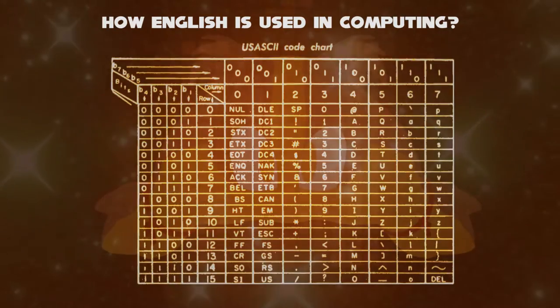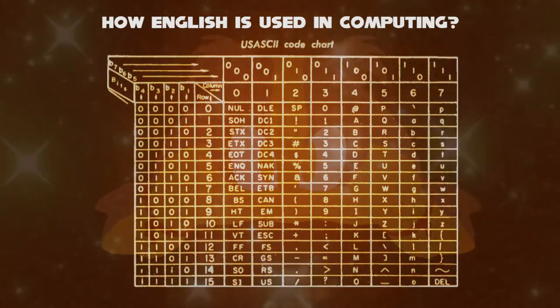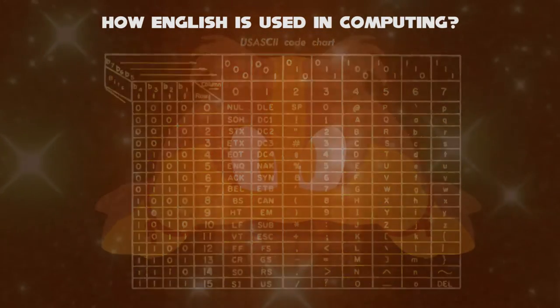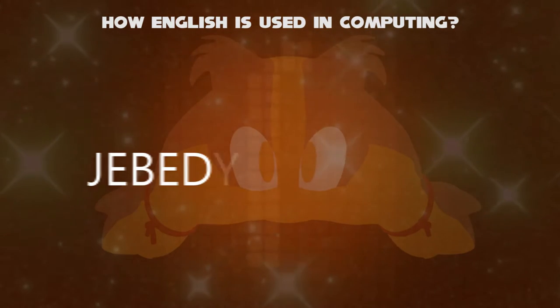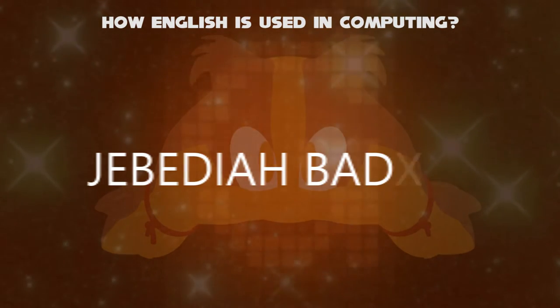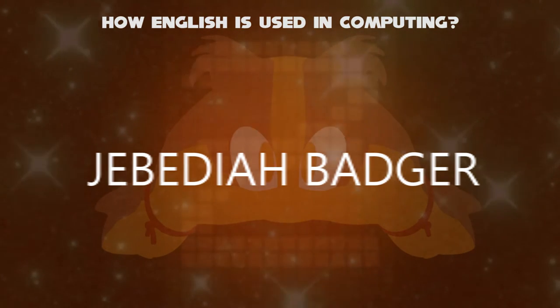This is in accordance with binary ranging from seven zeros to seven ones. For example, if I have to decode the word Jebediah Badger in all uppercase, it shows that there are 14 characters except space.